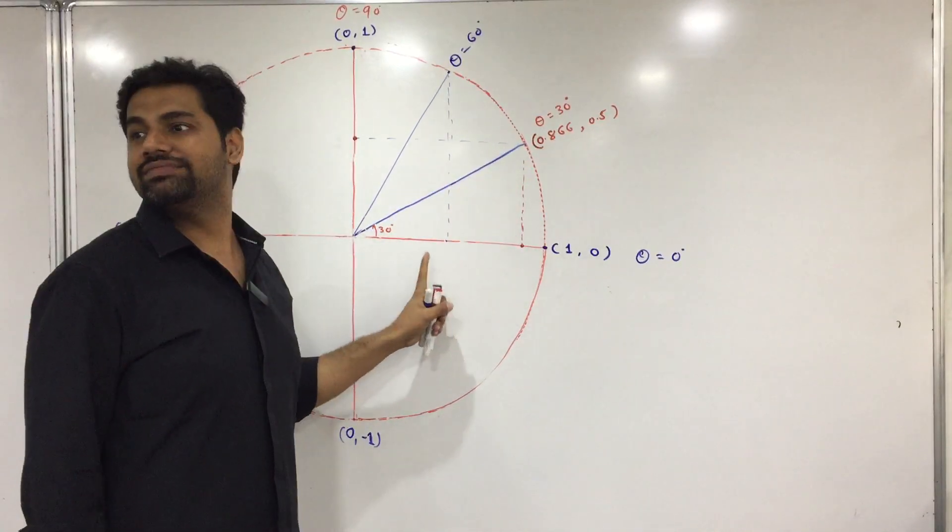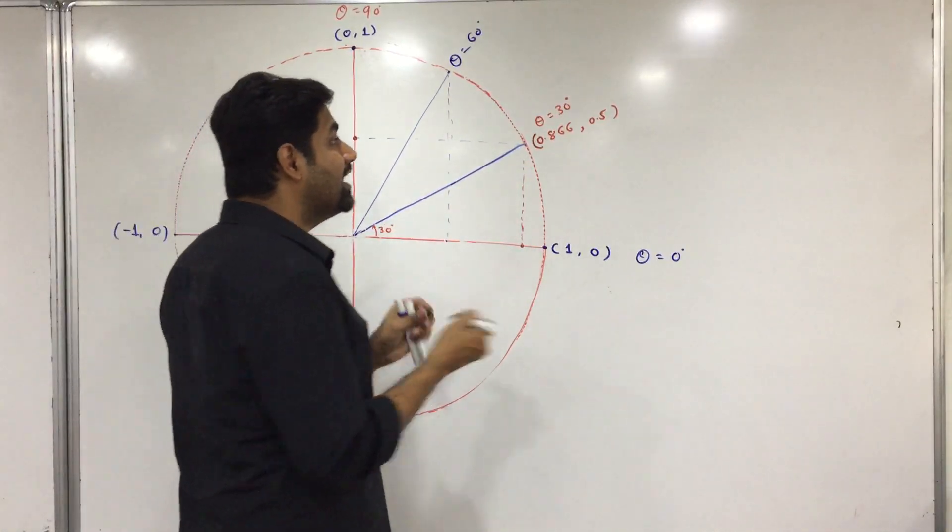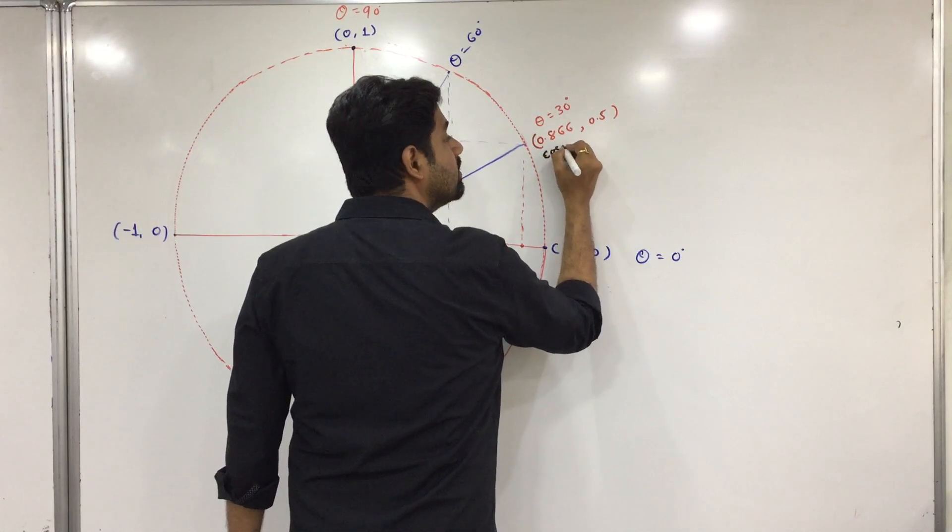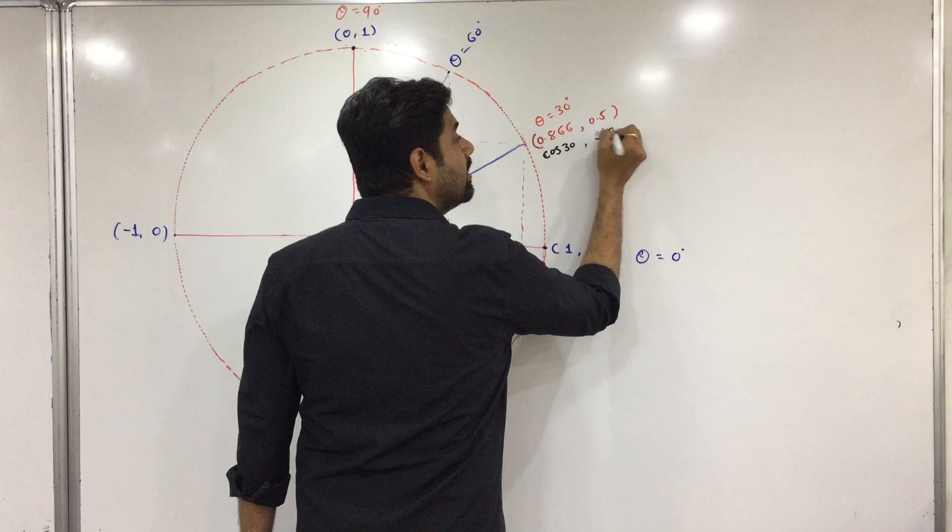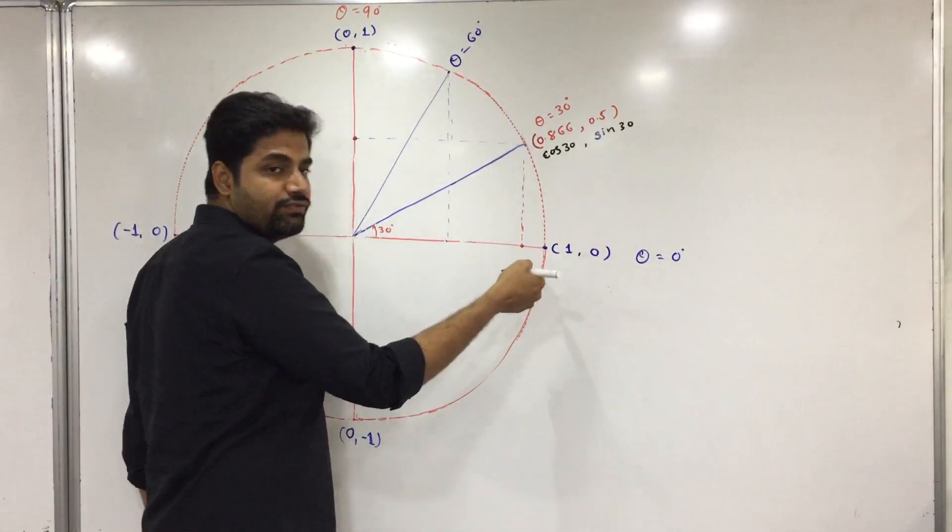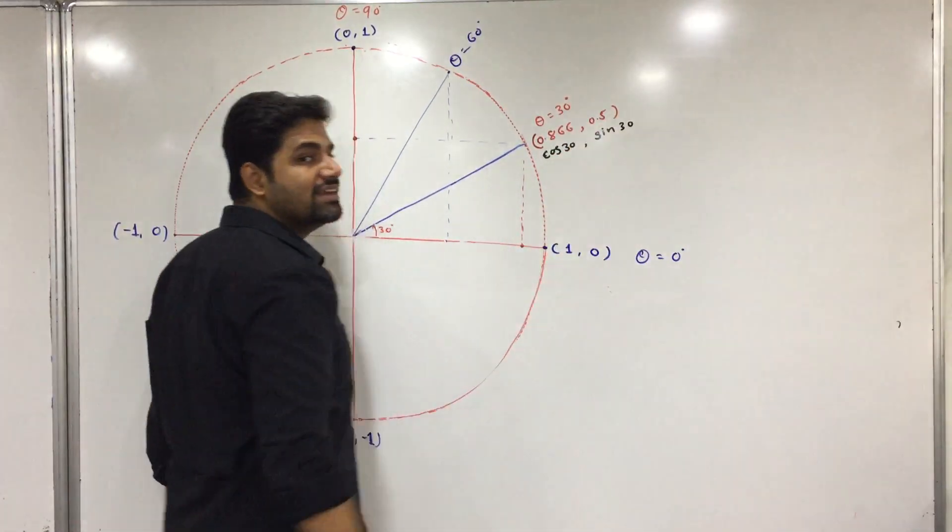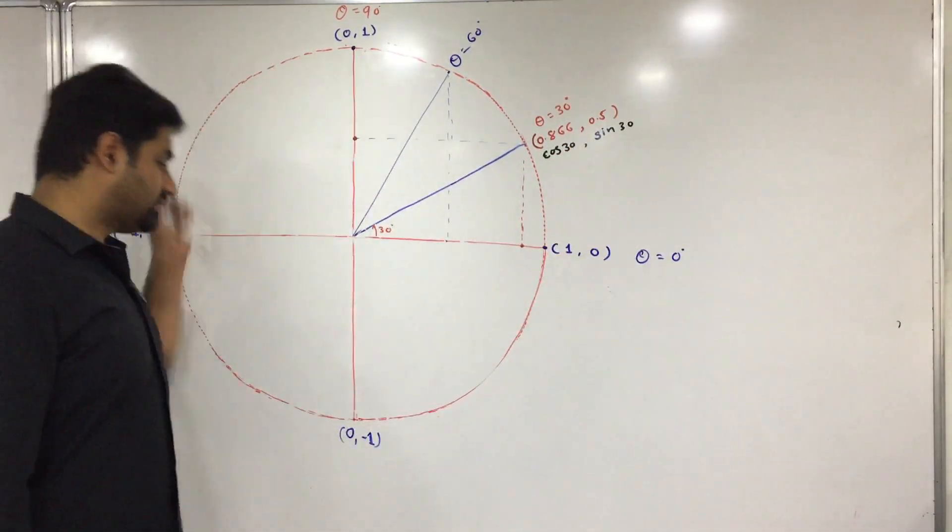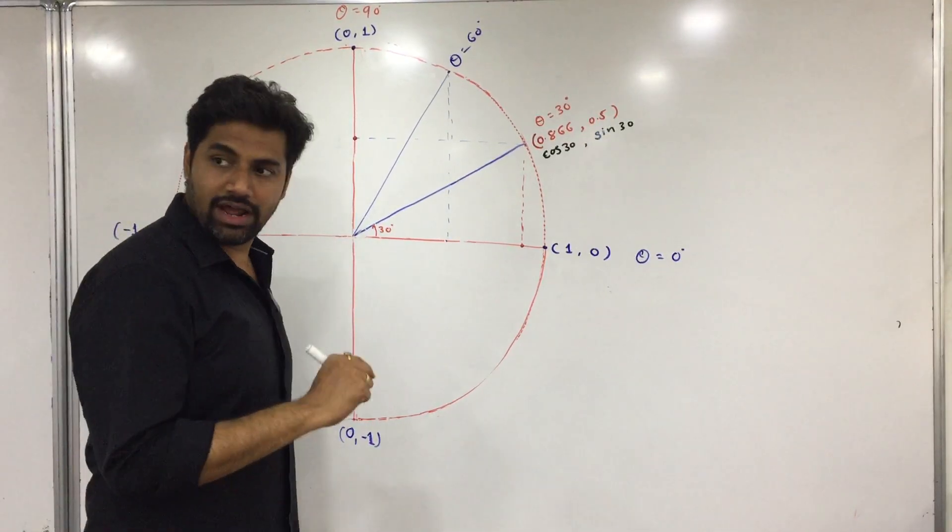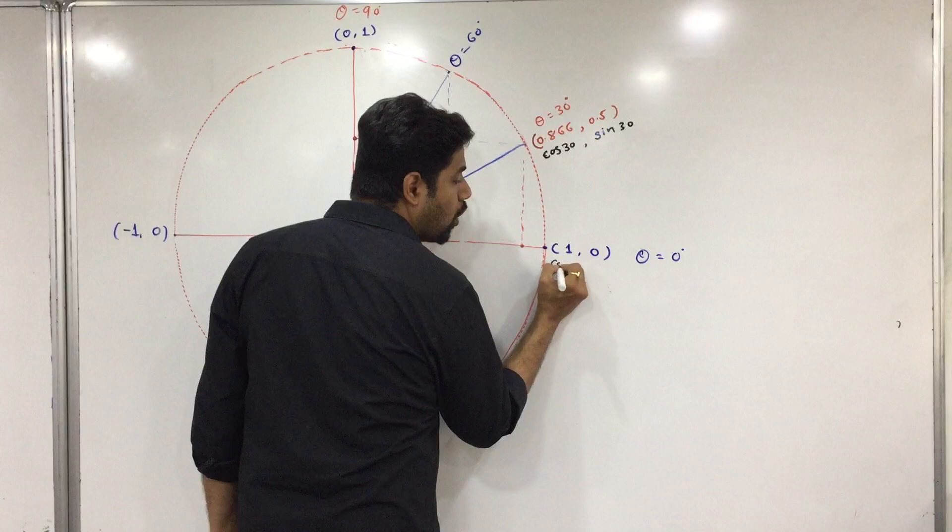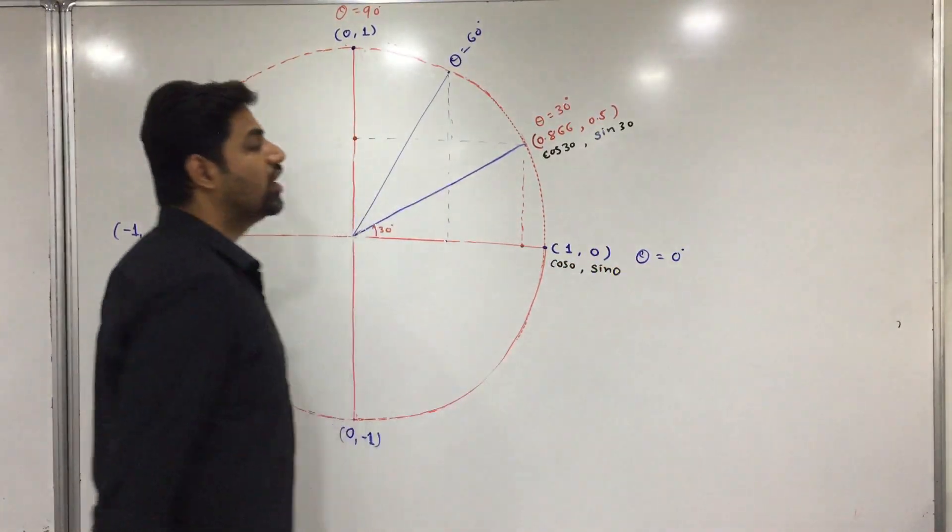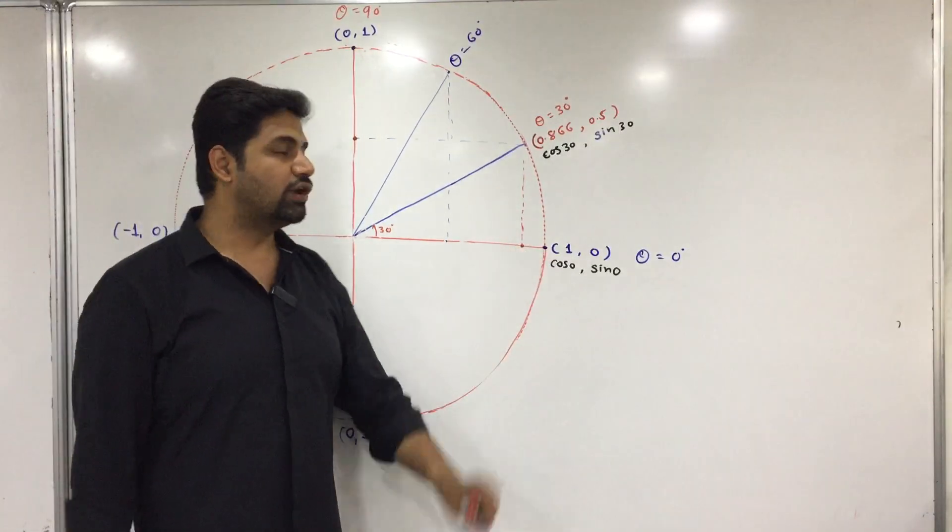And then he said this is cosine 30, this is sine 30. So x coordinate deals with cosine function, y coordinate deals with sine function in unit circle. So now here I can see that this is cos 0 and this is sine 0, where you have theta equal to 0.